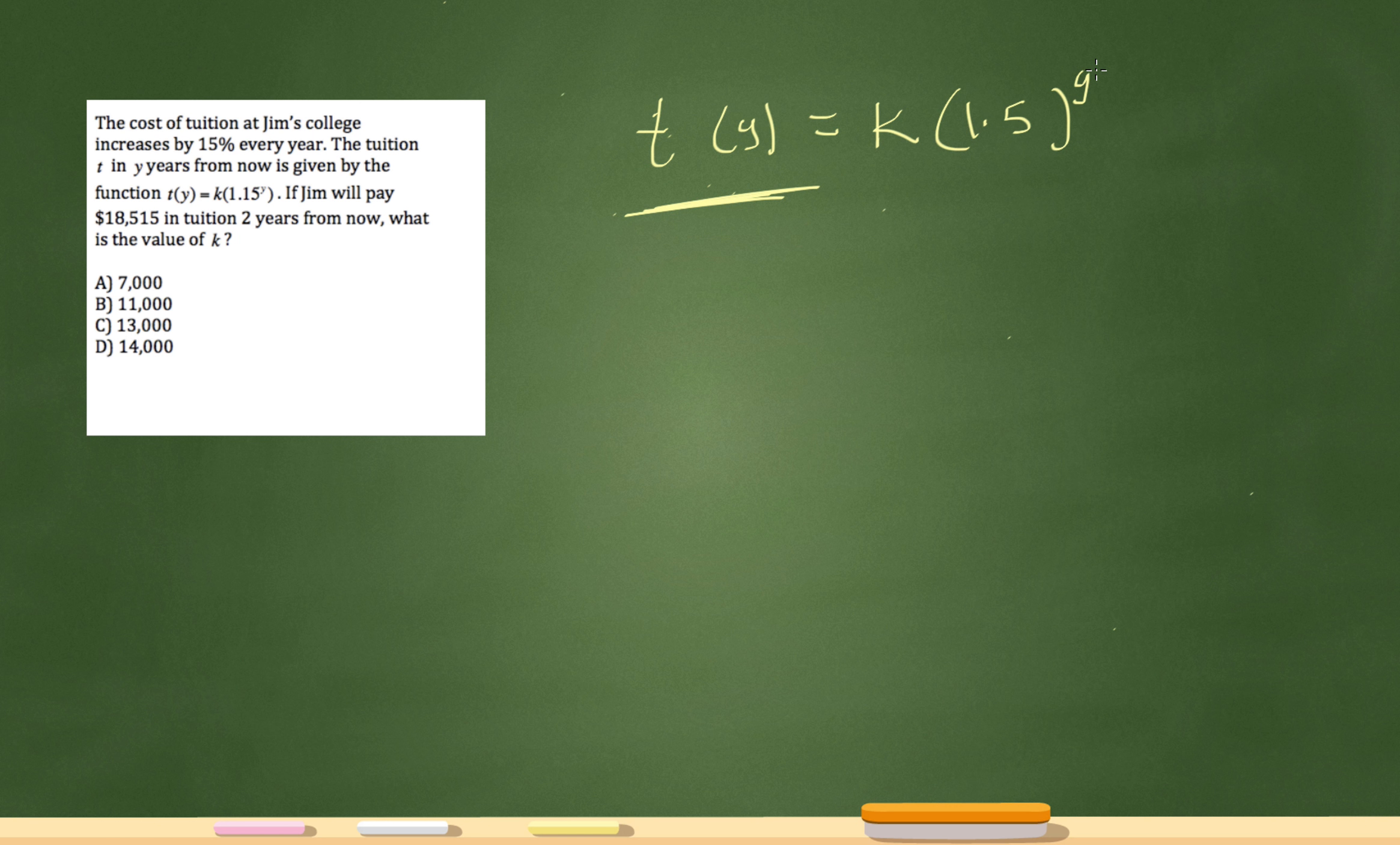And the problem tells me that Jim will pay $18,515 in two years from now. So I know that the value of y is 2, right? So this is my tuition, and this is 2 right here. And all I have to do is solve for k, as simple as that.